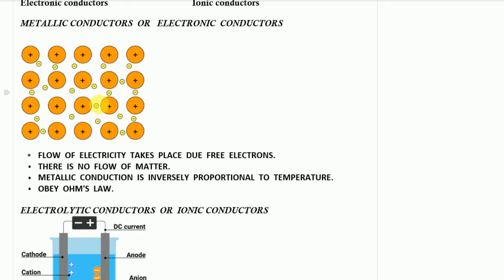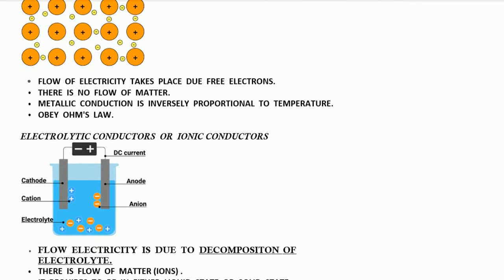At normal temperature these metal ions do not vibrate — they stay in place. But as temperature increases, the metal ions start vibrating and collide with the free electrons, restricting their flow. These metallic or electronic conductors also obey Ohm's law.